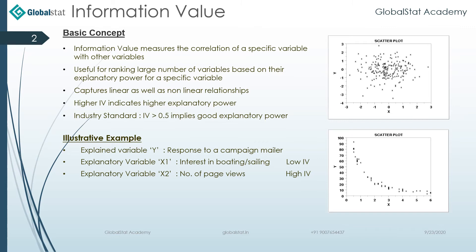The basic concept is that Information Value measures the correlation of a specific variable with other variables. It is useful for ranking a large number of variables based on their explanatory power for a specific variable. It captures linear as well as non-linear relationships. Higher the IV, better is the explanatory power.